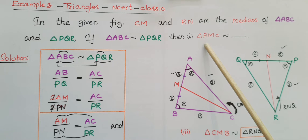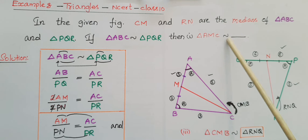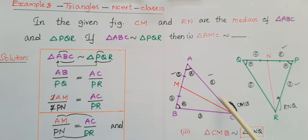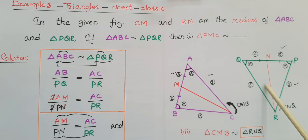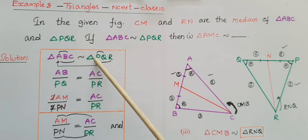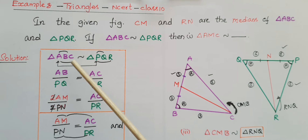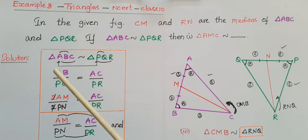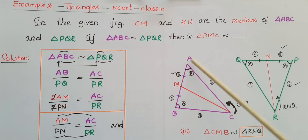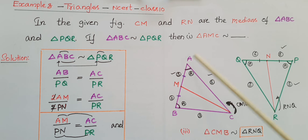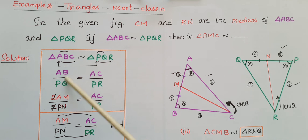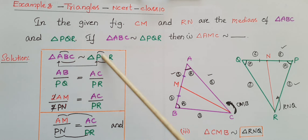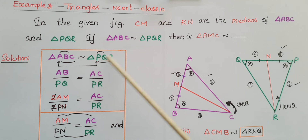There are three questions given. The first one is: triangle AMC is similar to which triangle? Since the two triangles are similar, we know that if two triangles are similar we can equate the corresponding side ratios. So AB by PQ is equal to AC by PR. We are taking AB and AC because they are the sides of triangle AMC, and the corresponding sides from the other triangle are PQ and PR.